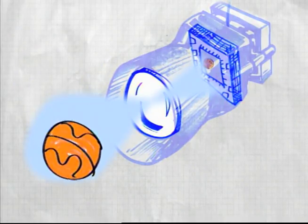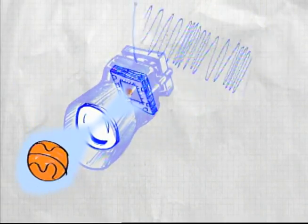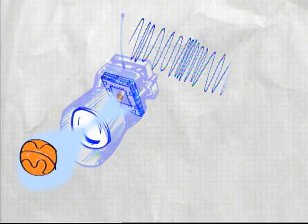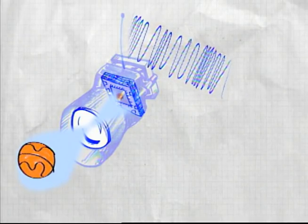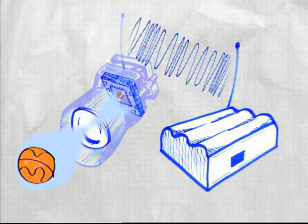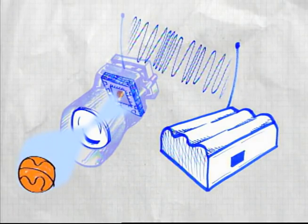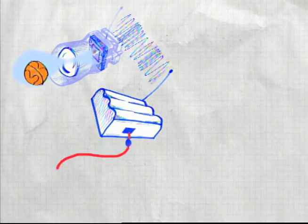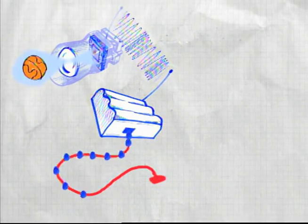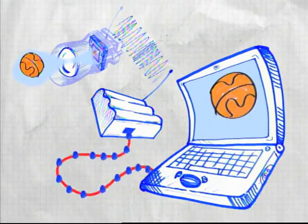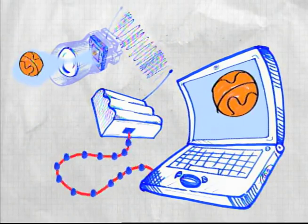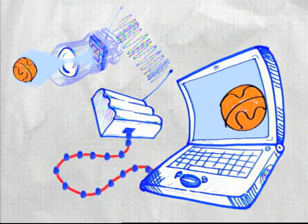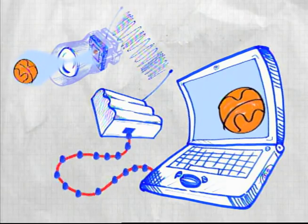The camera captures an image and transmits it as radio signals through the air to a receiver. The receiver converts the radio signals into digital information so the image can be sent to the computer and then displayed on the screen.